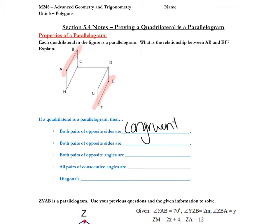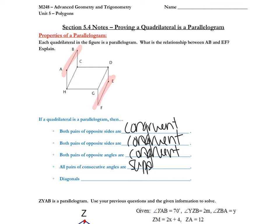Kenneth, what do we know about both pairs of opposite sides? Hopefully you said congruent. And then Patricia, what do we know about both pairs of opposite angles? That is correct — congruent. And all pairs of consecutive angles are... Nellia? Supplementary. And then diagonals — Mrs. H will take this one — diagonals bisect each other.